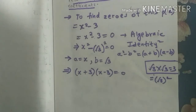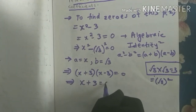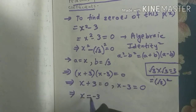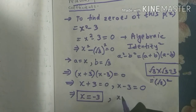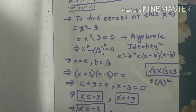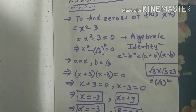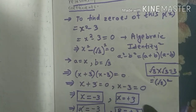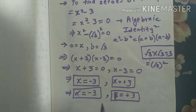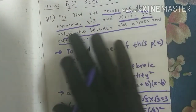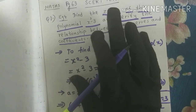Now x plus root 3 equals 0 and x minus root 3 equals 0. From the first: x equals minus root 3. From the second: x equals plus root 3. So the zeros of the quadratic polynomial, known as alpha and beta, are: alpha equals minus root 3 and beta equals plus root 3. So I have found the zeros minus root 3 and plus root 3.